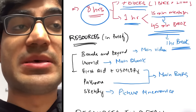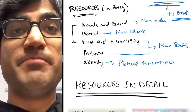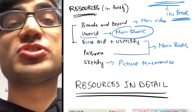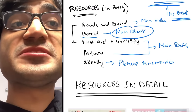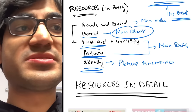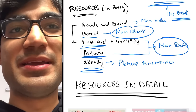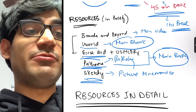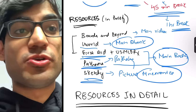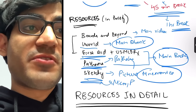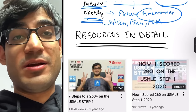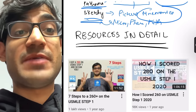The resources you need for USMLE Step 1 can be remembered as BOOFAPS. B stands for Boards and Beyond — the main videos. U stands for UWorld — the main question bank. F stands for First Aid and P is Pathoma, which are the main books almost everybody uses. S is Sketchy — picture mnemonics that are highly recommended for microbiology, pharmacology, and pathology. They made the whole process much easier.